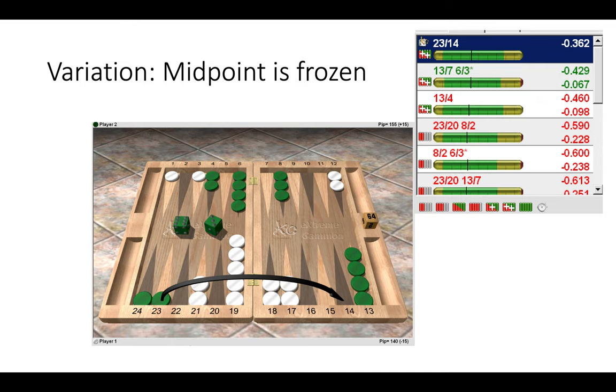So if white were to hit, then he would be leaving himself open to getting hit back with certain shots. So usually when you're thinking about freezing plays, they can occur in different places on the board.